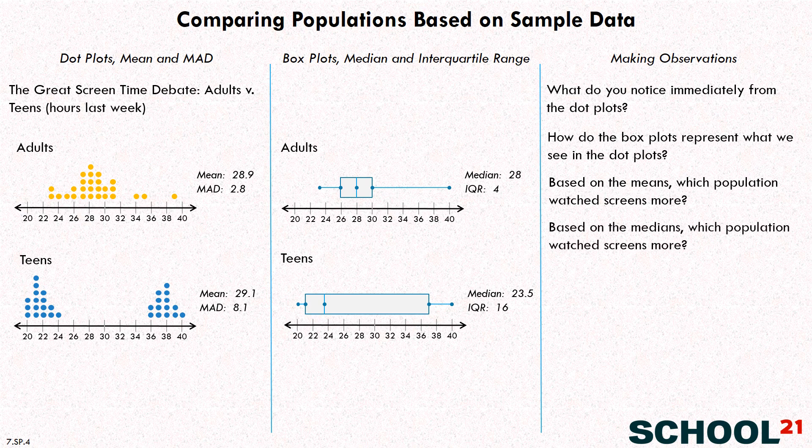Now, if we say based on the medians, which population watched screens more, then you would say, based on the median, the adults at 28 are higher than the teens at 23.5. That's really interesting. What's going on there? Well, because the teens are kind of clustered into two groups, that can put the mean in some sort of middle territory that is maybe a better indication of the average, but doesn't really capture these two different clusters here.